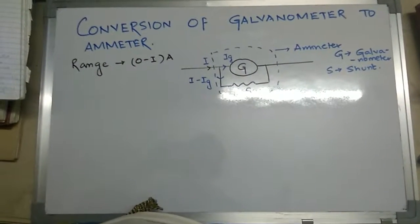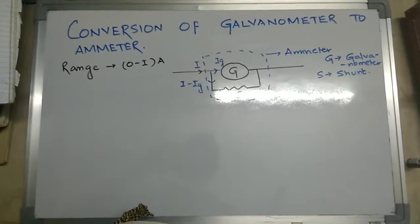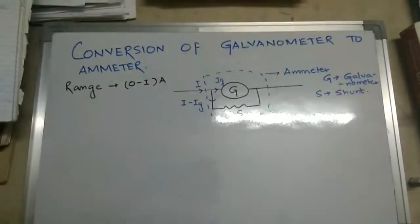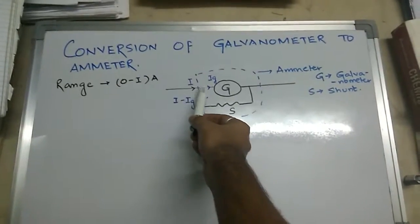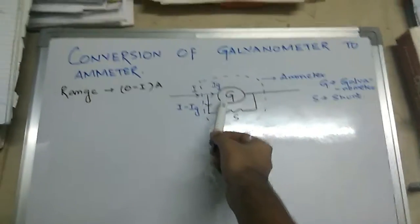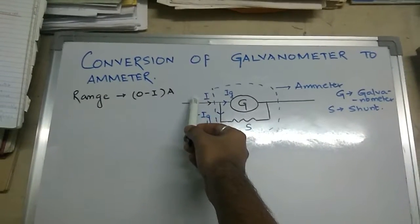Hello everyone, today we are going to learn how to convert a galvanometer to an ammeter. We have a setup having a galvanometer and a low resistive shunt, and we have current I which is distributed as Ig, that is the galvanometer current, and the rest current which is passing through the shunt.